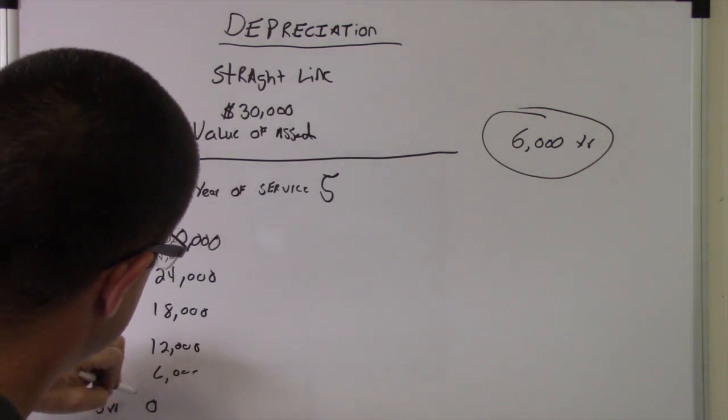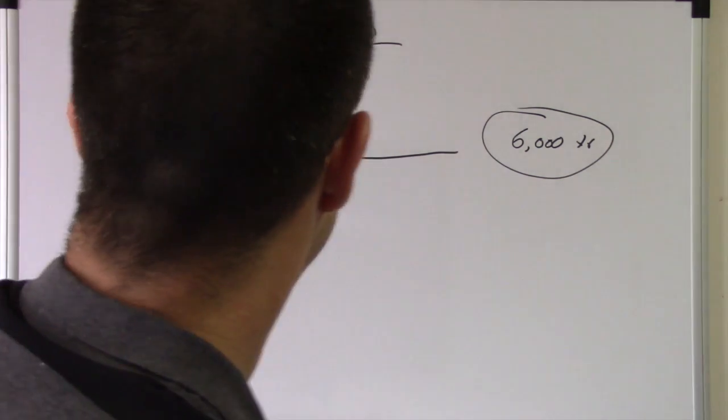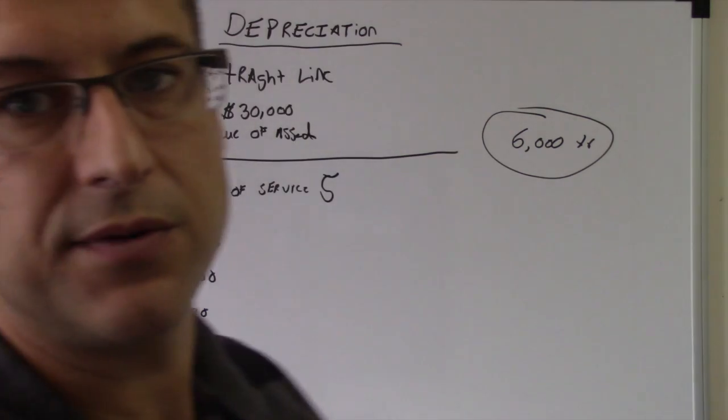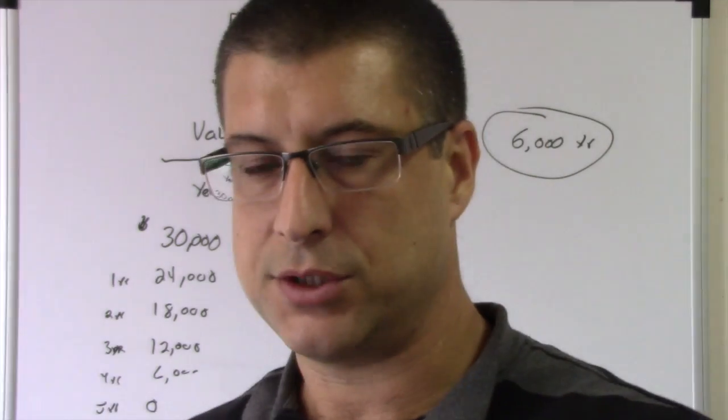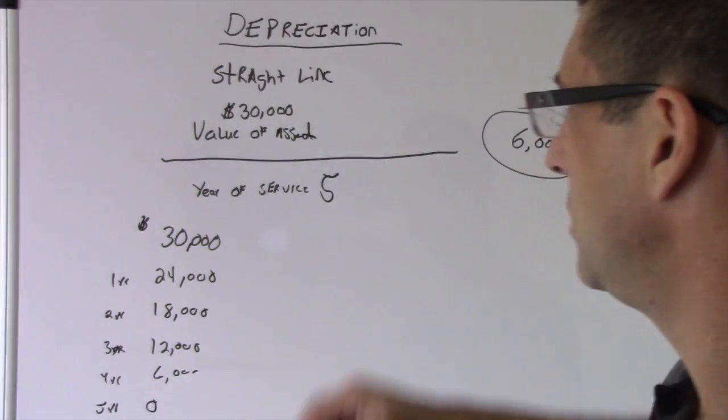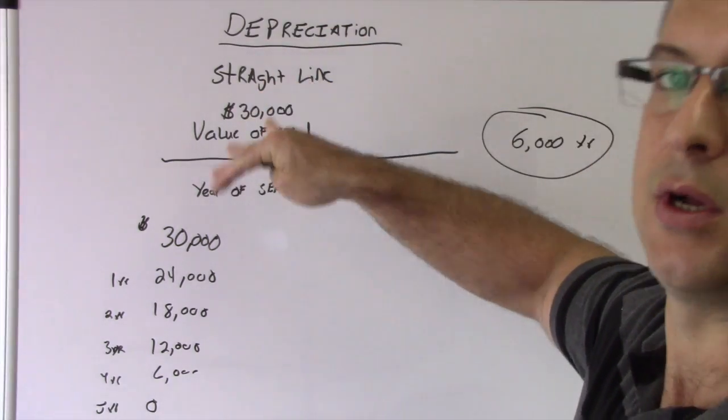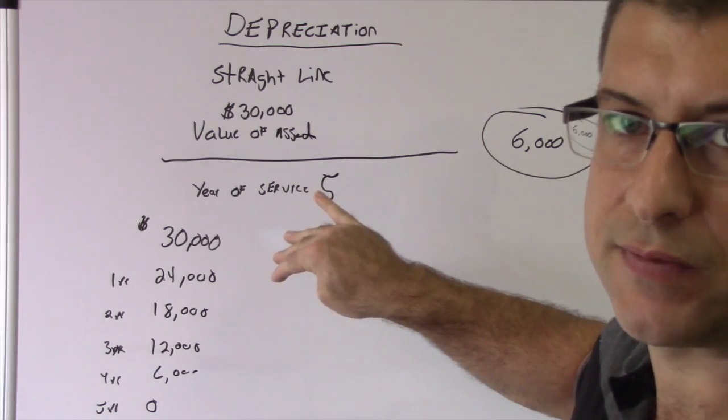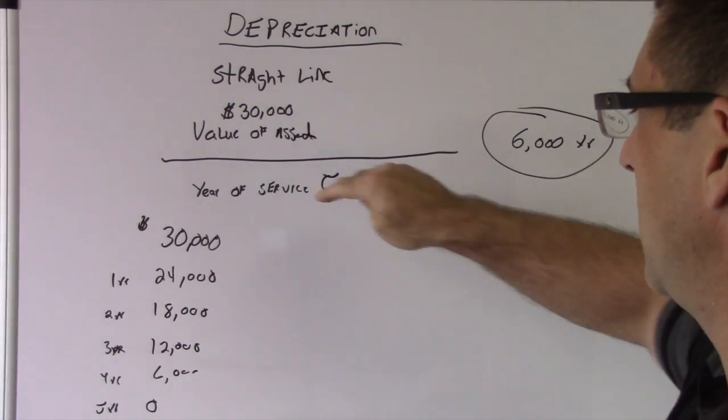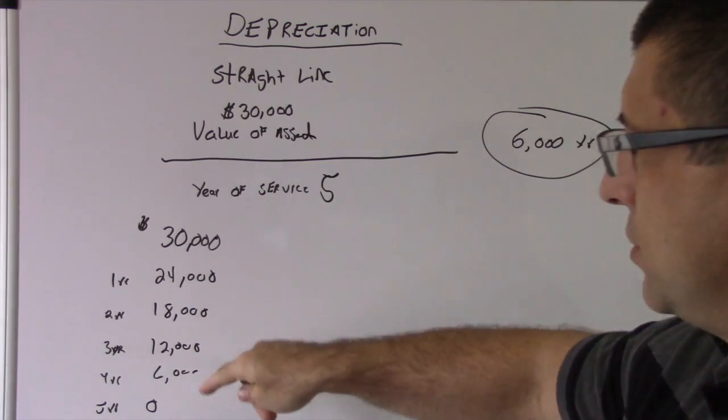Year five: zero. So that's how you figure out your depreciation for straight line. You take how much it's worth divided by the years of service, and that's how much it goes down each year.